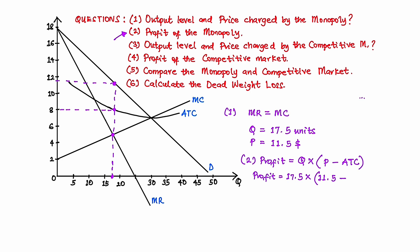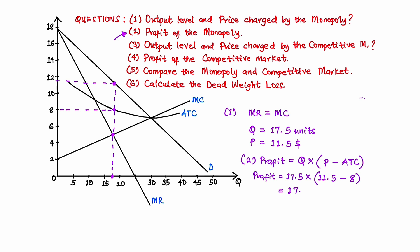We go from the quantity all the way to the ATC curve. When we get the point on the ATC curve, we trace it back to the vertical axis and get the average total cost amount of $8. So the profit will be equal to 17.5 times (11.5 minus 8), which is 3.5. Then 17.5 multiplied by 3.5 gives us $61.25. This is the maximum profit that the firm will earn.